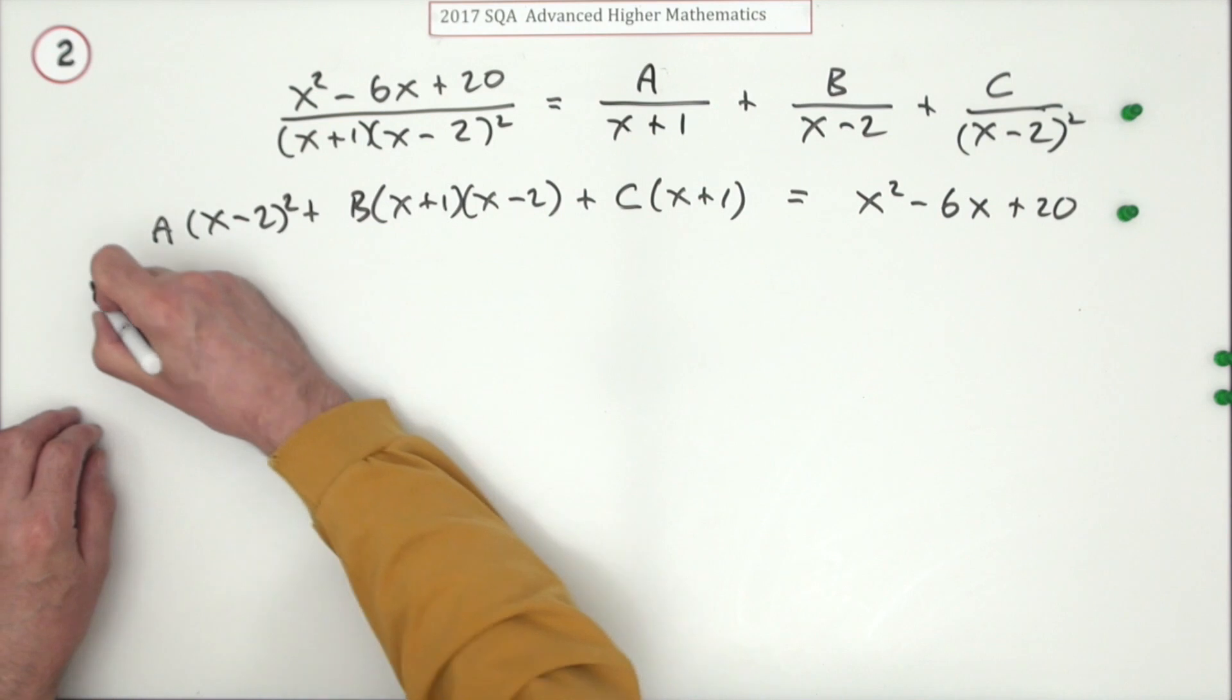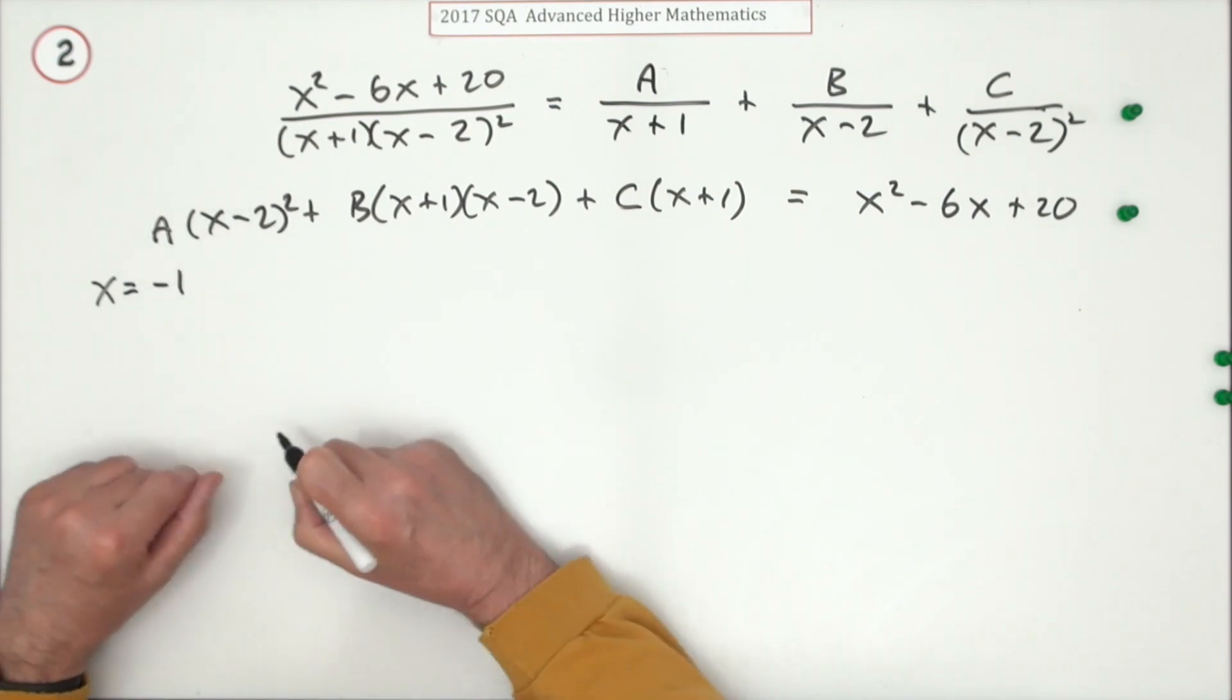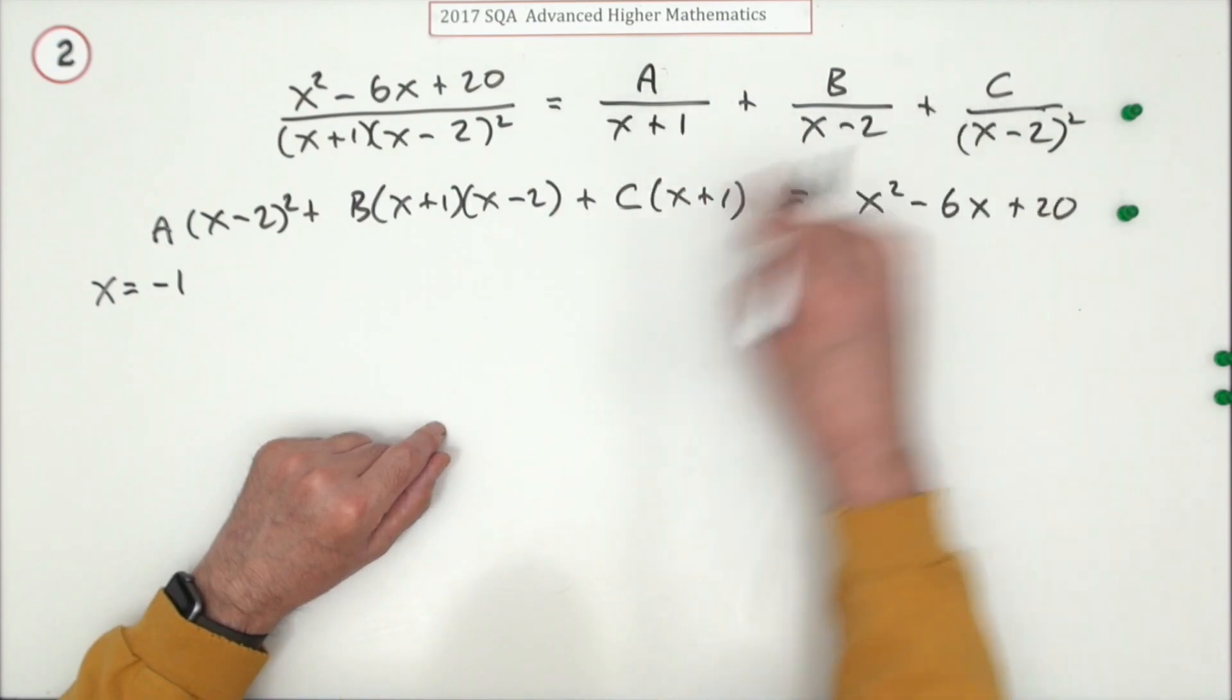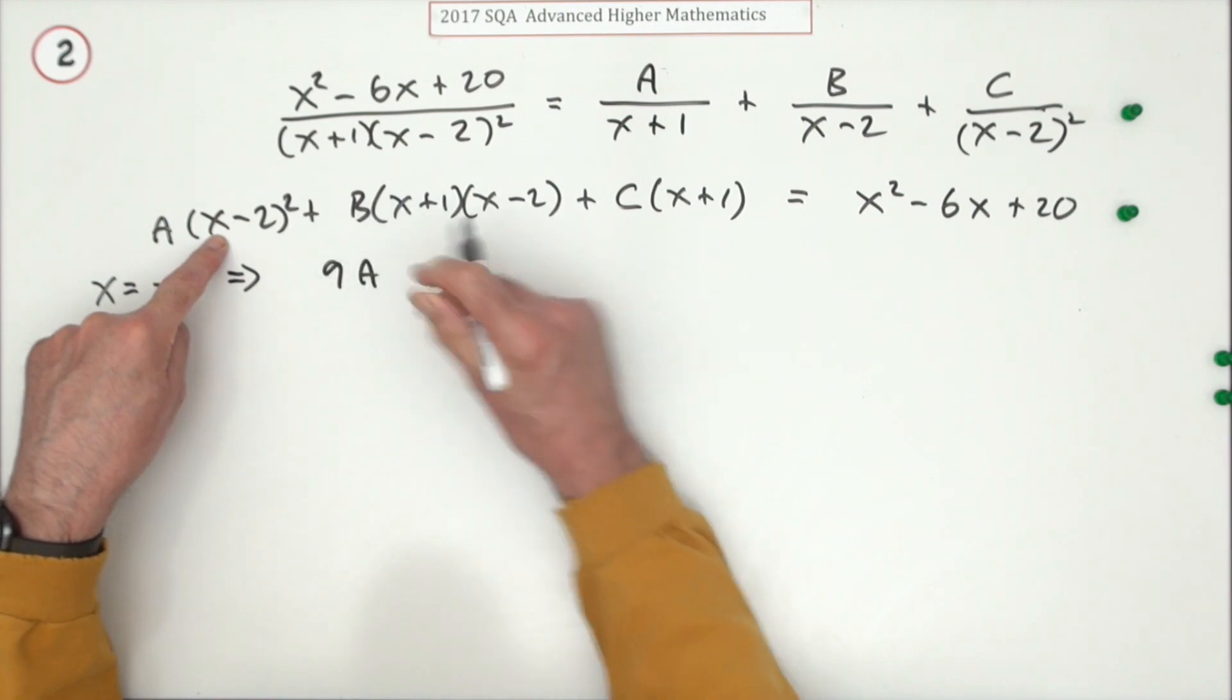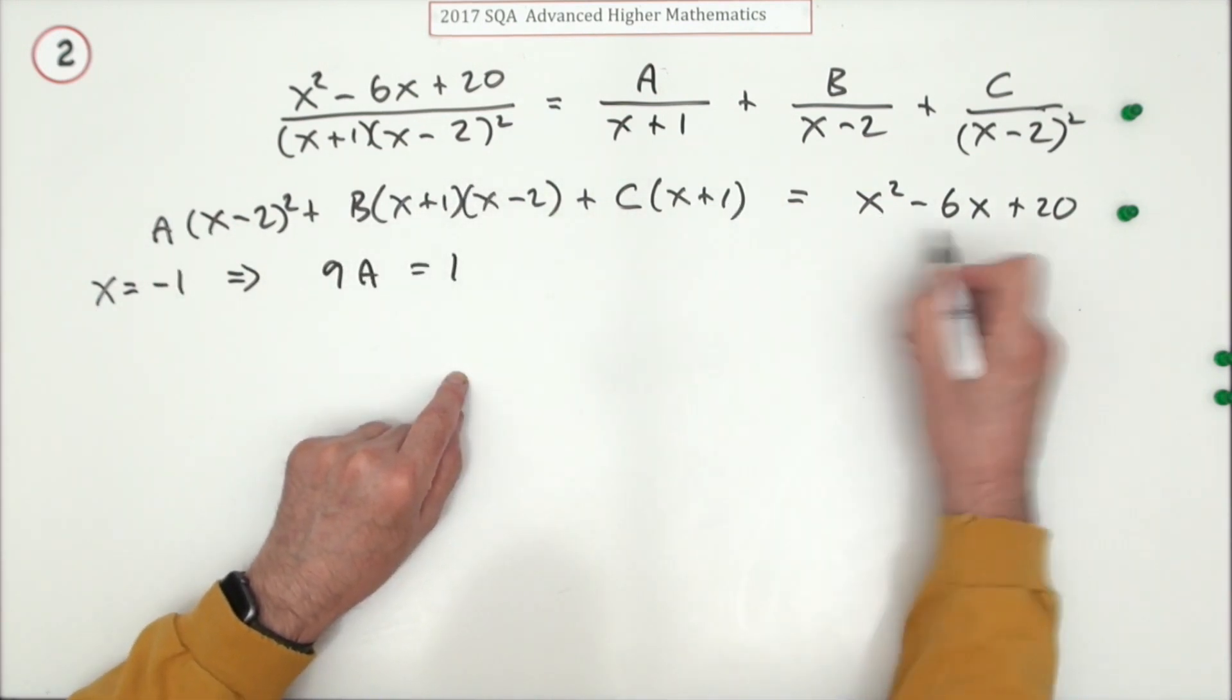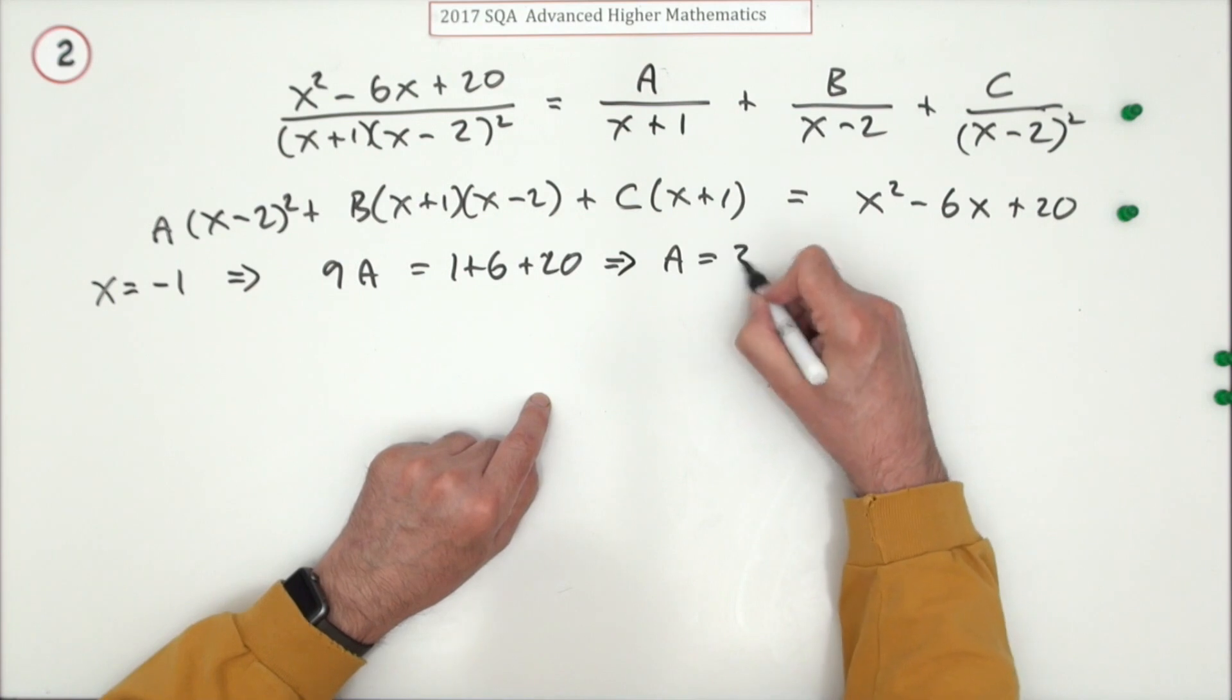You pick convenient numbers. I could get A if I knock out that by making x is negative one. If x is negative one, you've got negative three which is nine A, knocked out, knocked out, and that then becomes one plus six plus twenty, which is twenty seven. Nine into twenty seven gives A equals three.